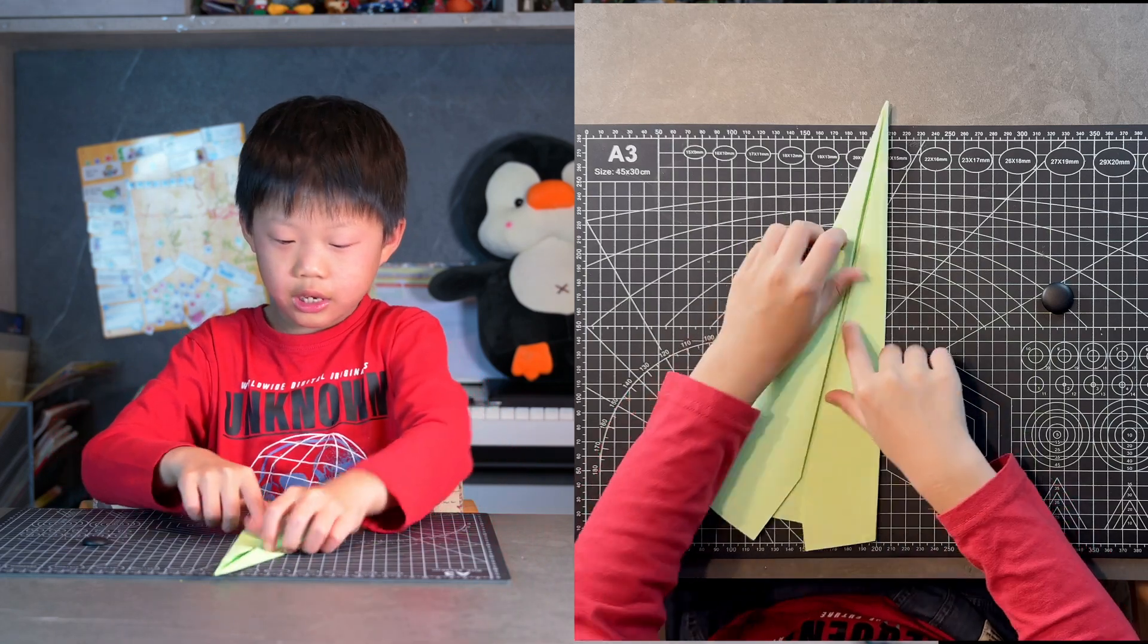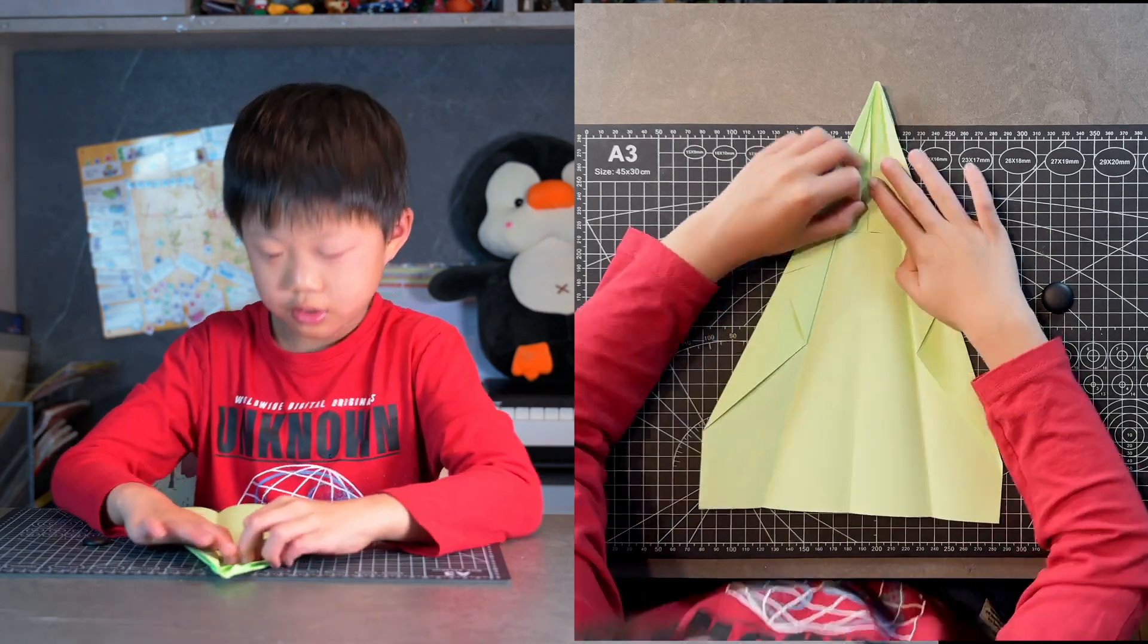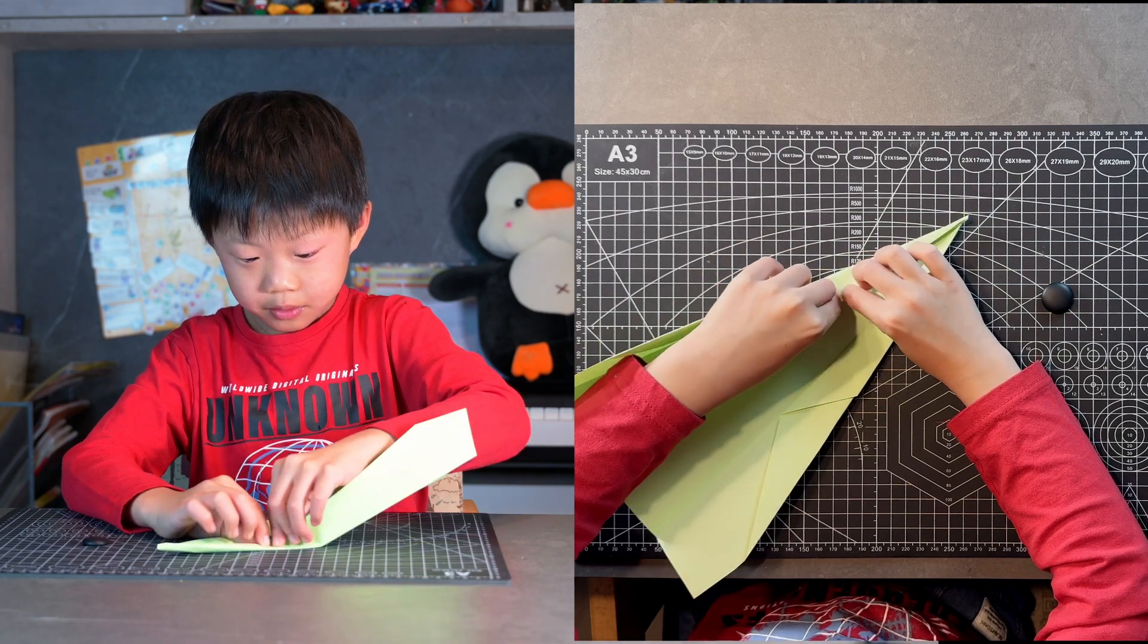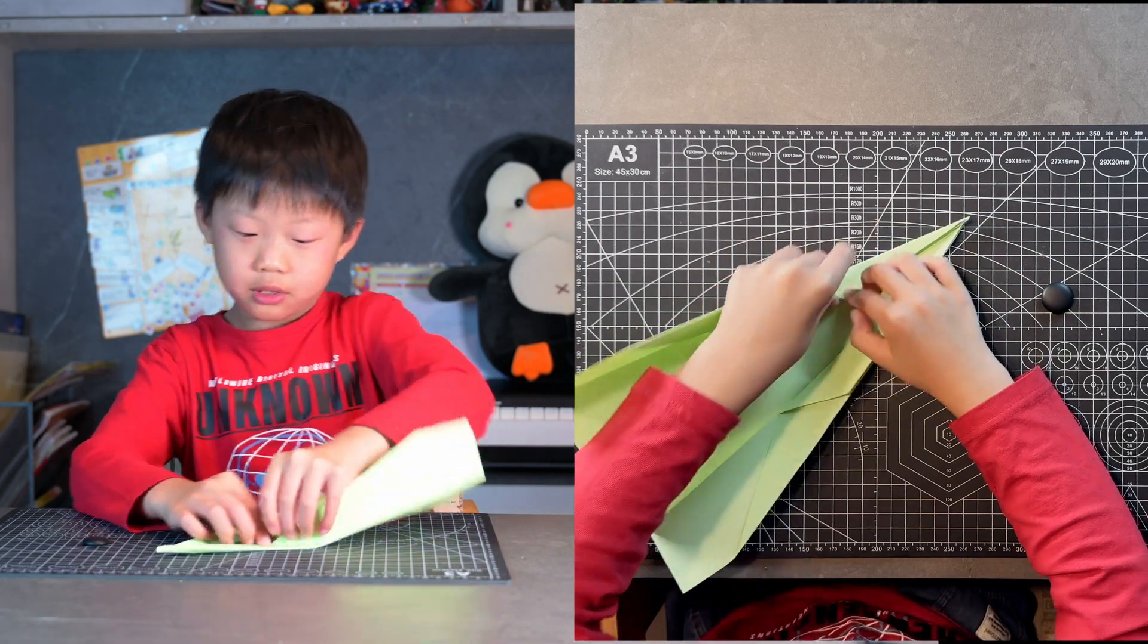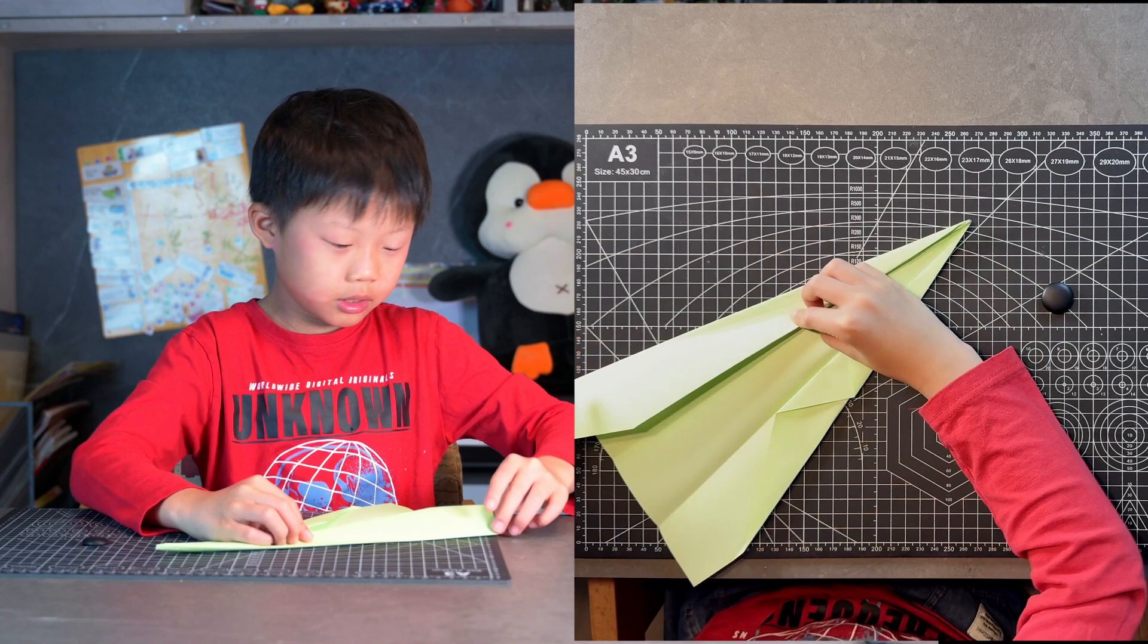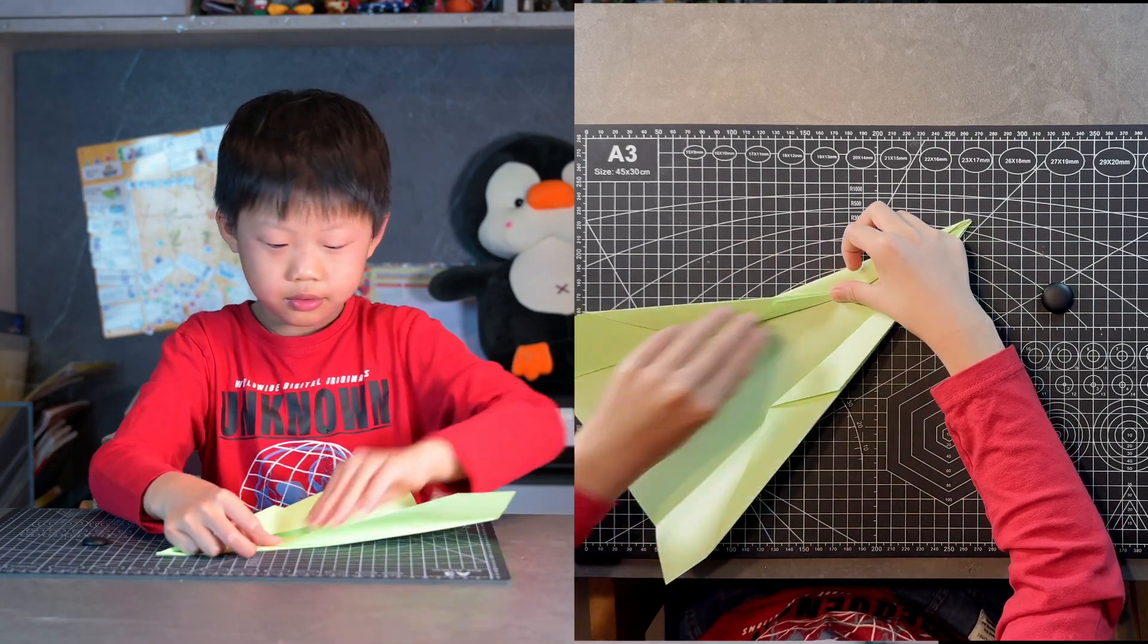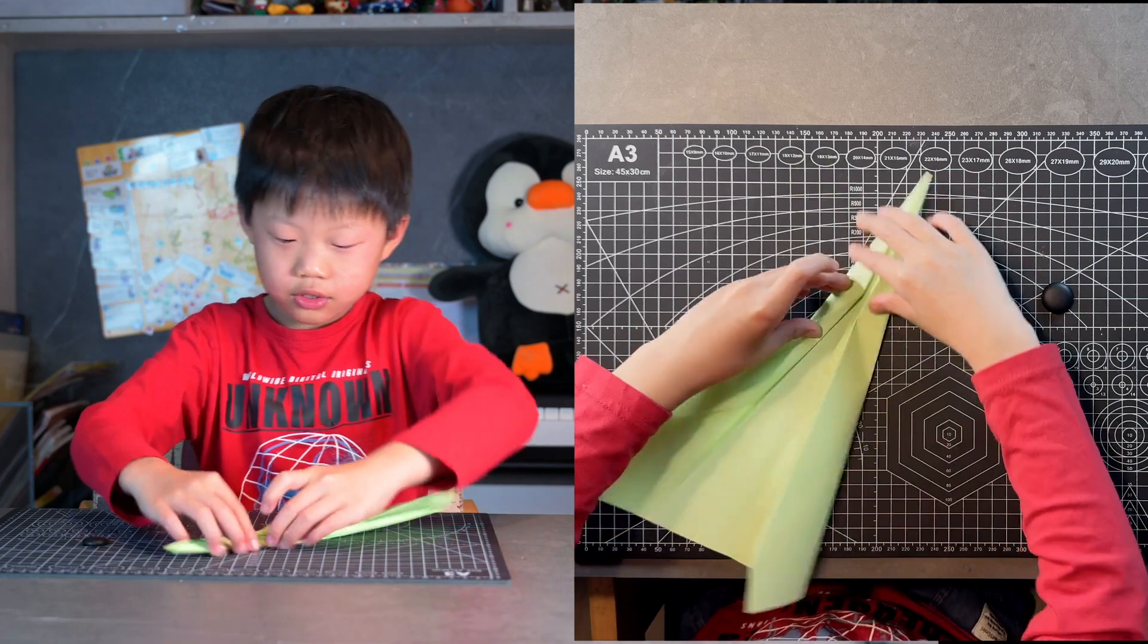Now we can open it all up to here. Now do it like this. Make a pinch crease there. Fold from the pinch crease to this corner. Same thing on the other side.